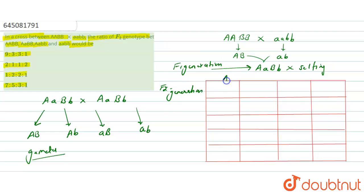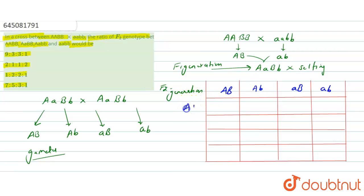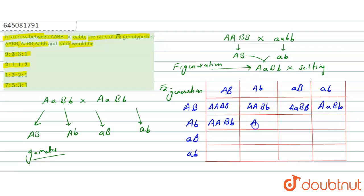Let's see what will be the possible combinations in the F2 generation. Writing down the four gametes — AB, Ab, aB, ab — and combining them, we get genotypes including AABB, AABb, AaBB, AaBb, AAbb, Aabb, aaBB, aaBb, and aabb.